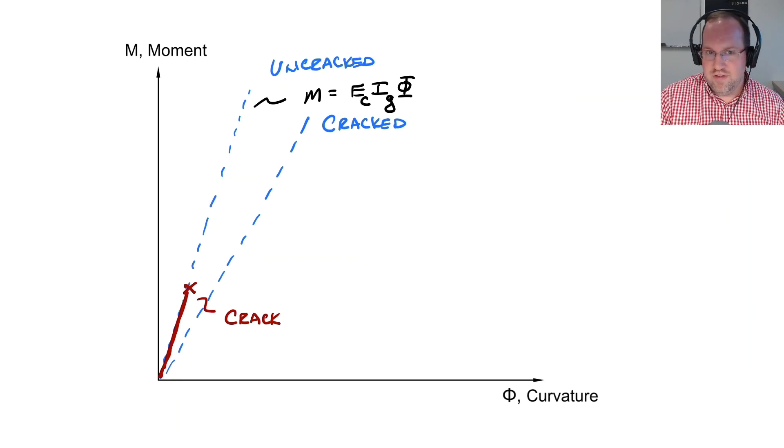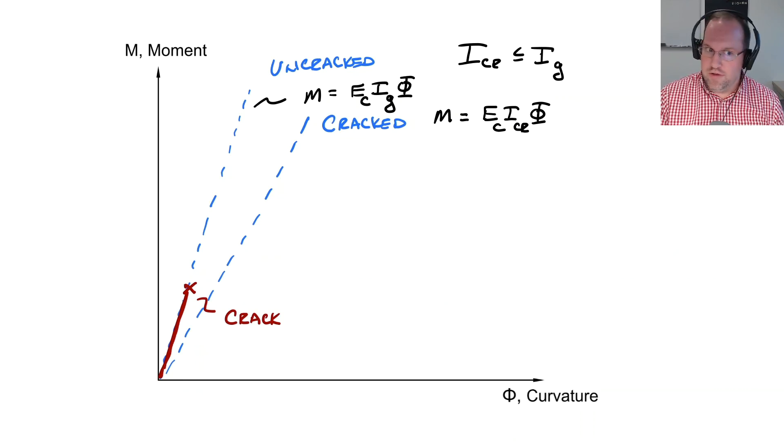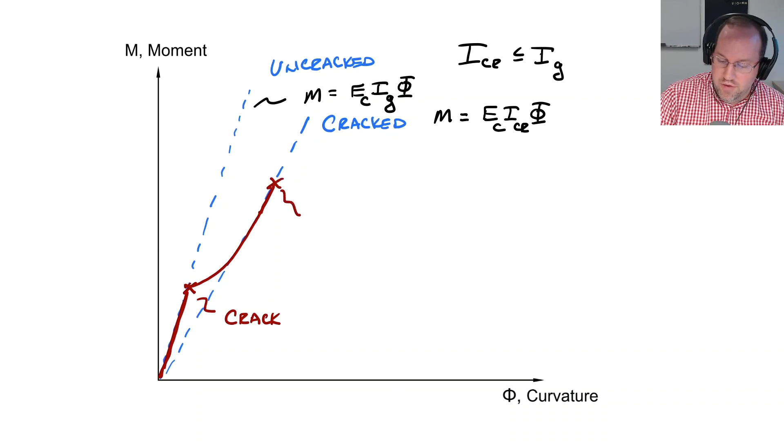Now along the cracked curve it still follows linear behavior so we'll still have our moment is equal to E times I times the curvature. E is still the modulus of our concrete that's unchanged but we're going to be using the cracked moment of inertia for our section and because we have cracks the cracked moment of inertia is always less than the gross or uncracked moment of inertia. So as we increase the moment as the crack progresses we'll transition over to our cracked moment of inertia section and then at some point we're going to have yielding of our steel.